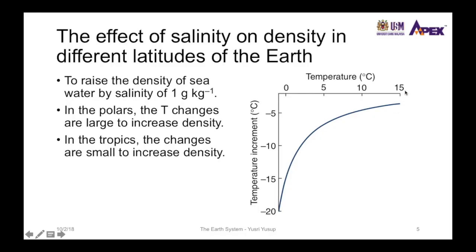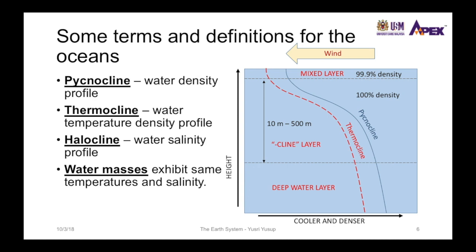Key ocean terms include the pycnocline, thermocline, halocline, and water masses. The pycnocline is defined by a water density profile, the thermocline by a water temperature profile, and the halocline by a salinity profile. The surface mixed layer comes into direct contact with the atmosphere and wind and has slightly lower density than the deeper ocean. Below this, density and temperature decline rapidly in the pycnocline or thermocline layer, which extends from about 10 to 100 meters depth.